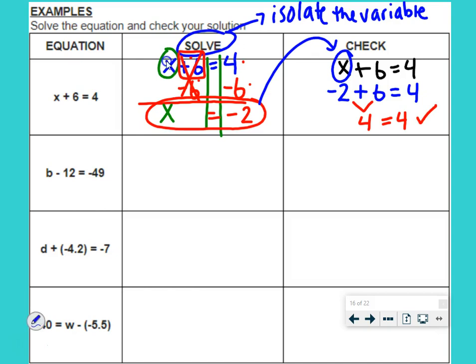Next example, we have b minus 12 equals negative 49. Again, our goal is to isolate the variable. Get that variable all by itself. So, first, find the variable. There it is, b.